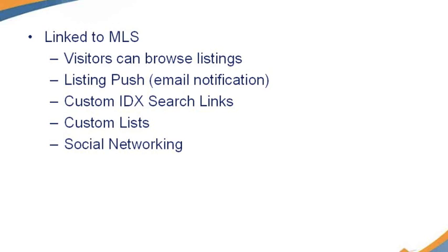If you're specializing in a specific part of town — for example, in my area I was specializing in Willow Glen — you can create a custom list: the five best values in Willow Glen. To see the five best values in Willow Glen, click here. People click, they get to the results page, which is my custom list of what I perceive to be the best values in town. They don't have to be my listings; they can be any listings. They're coming through IDX, and my information is the most prevalent point of contact for the consumer to engage. So you can create custom lists.